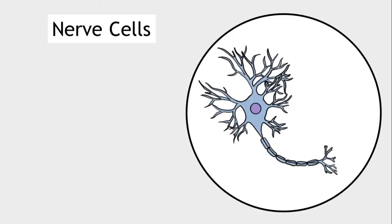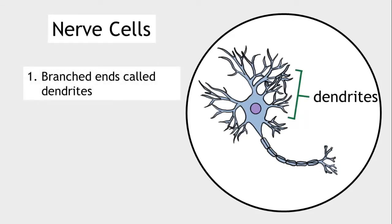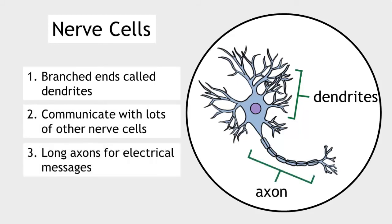Nerve cells are specialized in that they have branched endings called dendrites. This is so they can communicate with lots of other nerve cells. You will also notice they have long axons along which the electrical message can travel.